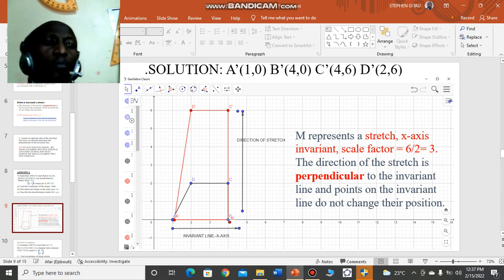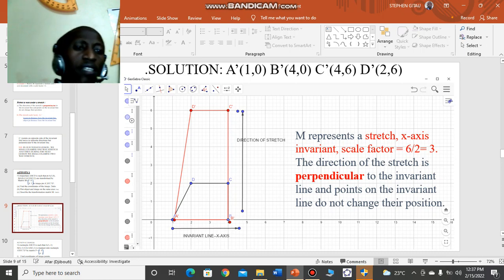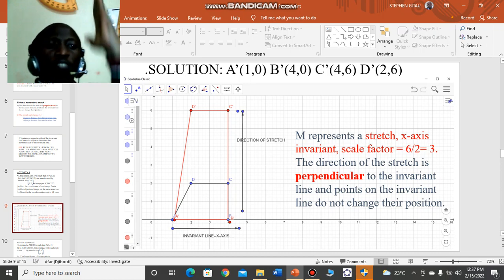In actual fact, we have also seen point D moving vertically up, C moving vertically up. So in this case, as the invariant line is horizontal, x-axis, the direction of stretch is vertical. So the two are perpendicular to one another.